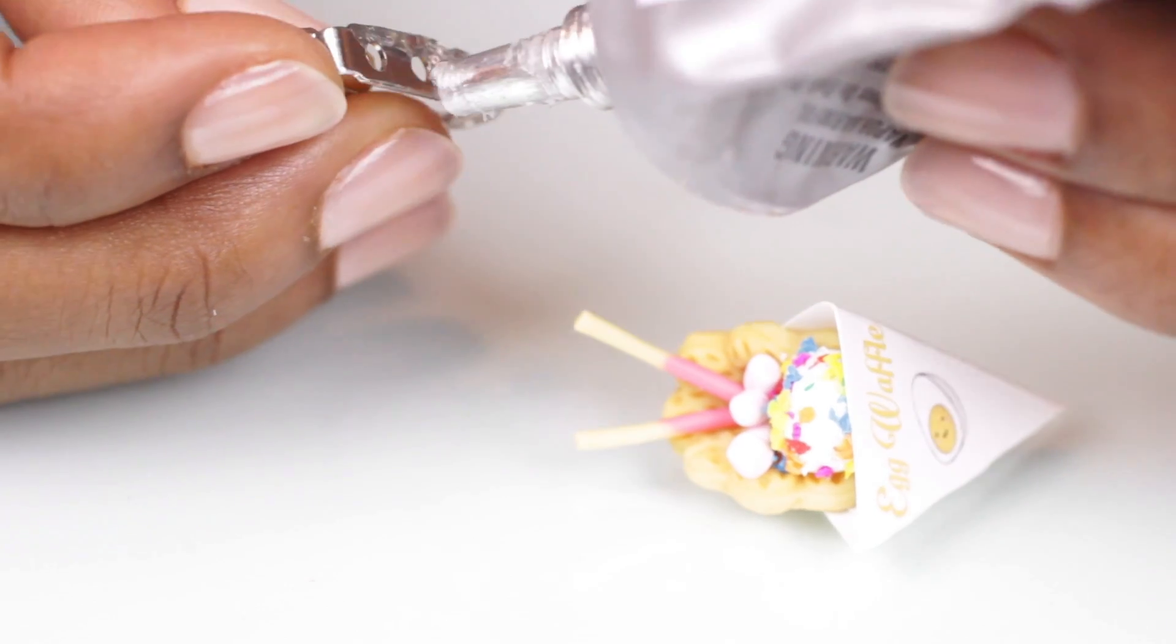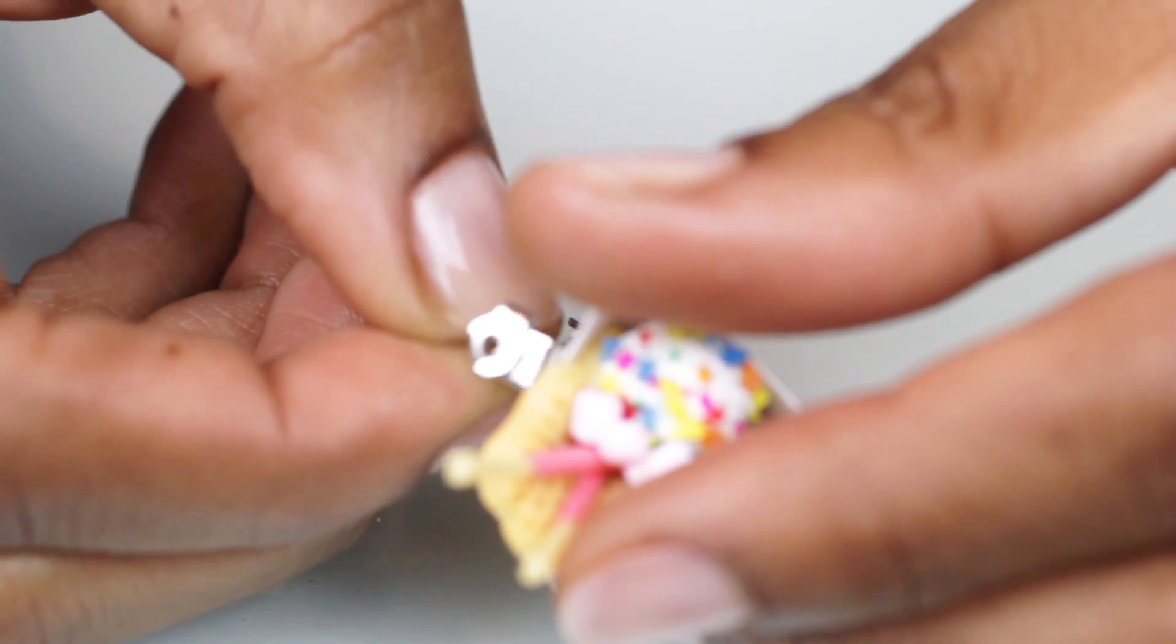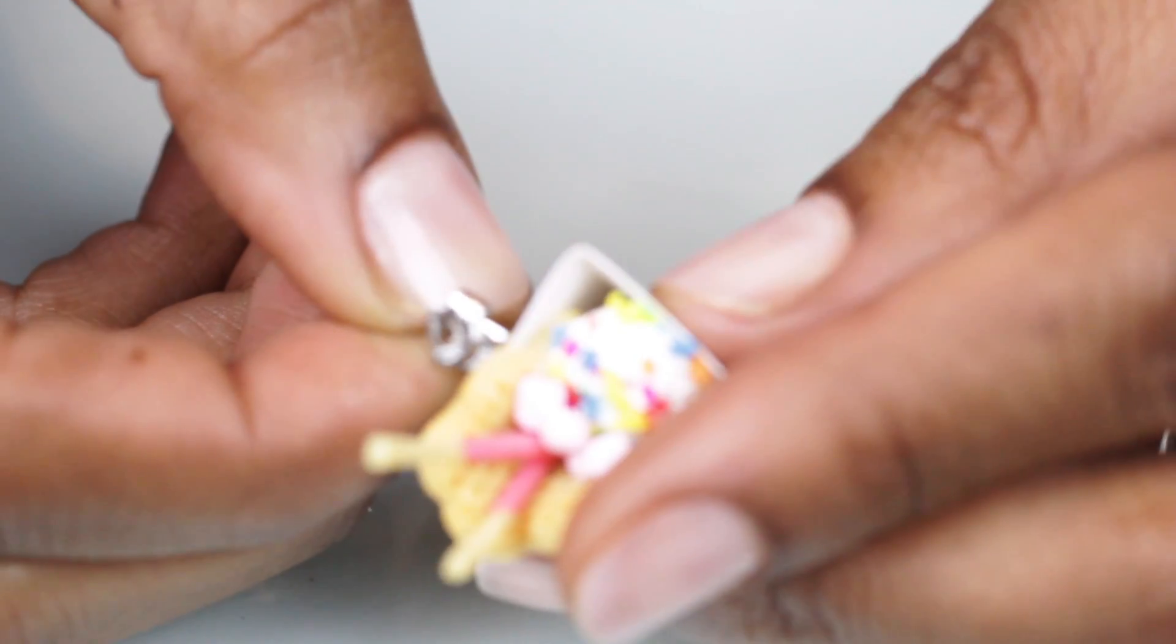And you just want to bake the whole thing together now. And after it's been baked you can glue it to a brooch or you can make it into a charm if you add an eye pin.